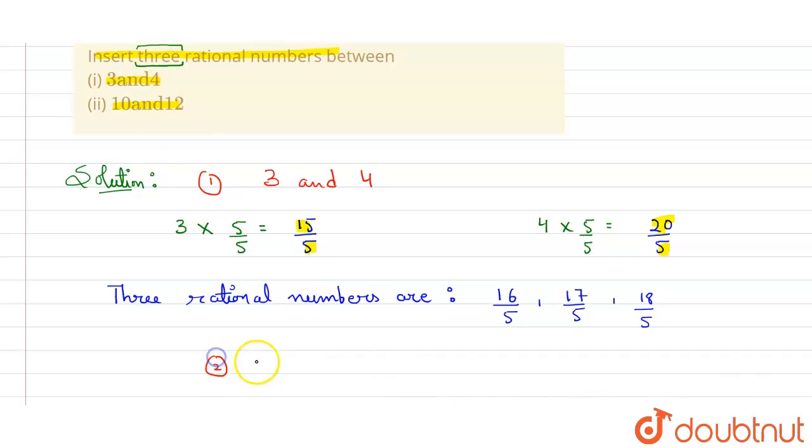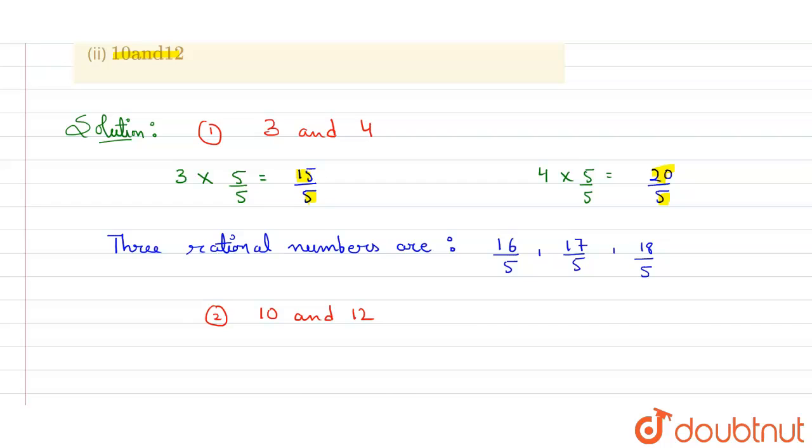Now the second part. We have found the first part, now second part, that is 10 and 12. Again we have to find three numbers, so we will apply the same rule - we will just multiply and divide by any number greater than three.